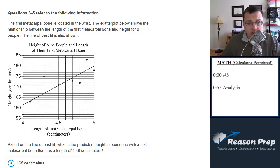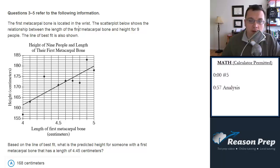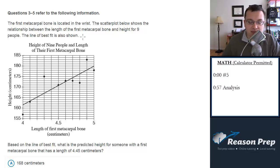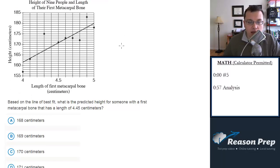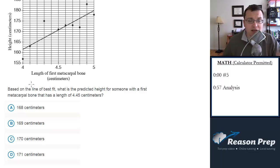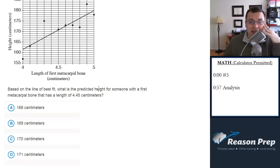The first metacarpal bone is located in the wrist. The scatter plot below shows the relationship between the length of the first metacarpal bone and height for nine people. A line of best fit is also shown. Now the question: based on the line of best fit, what is the predicted height for someone with the first metacarpal bone that is a length of 4.45 centimeters?